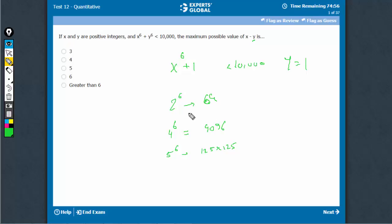So the maximum possible value of x is 4. 4, y happens to be 1. So 4 minus 1, the value is 3. That's the right answer.